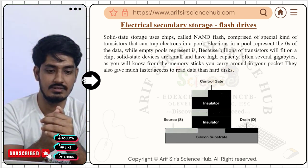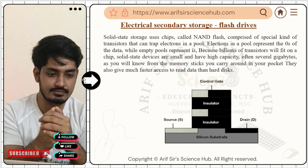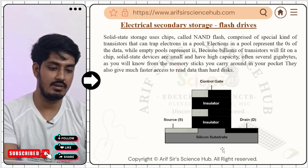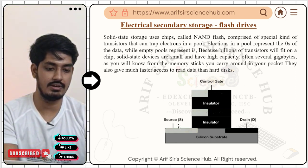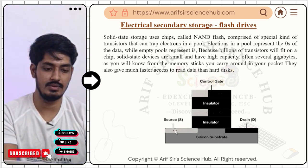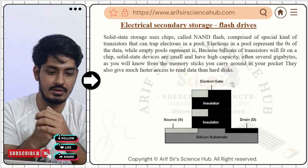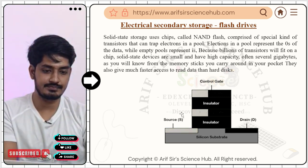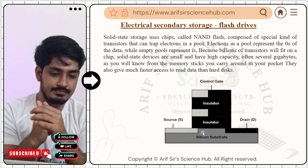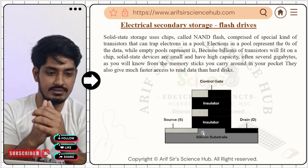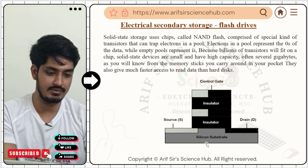Electrical secondary storage — flash drives and SSDs — uses chips called NAND flash, made by transistors. A transistor has three pins: source (input), drain (output), and control gate, which controls electron flow. The transistor is made from semiconductors — materials that can be both conductive and non-conductive (insulating).